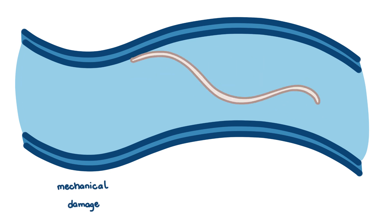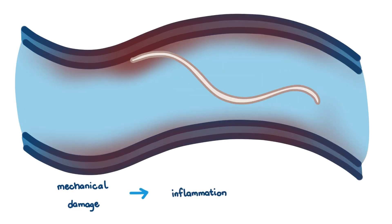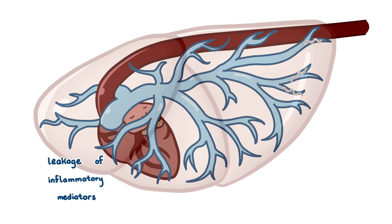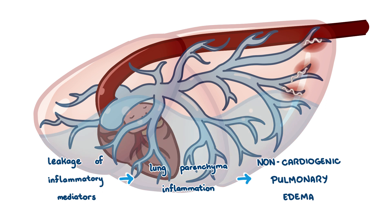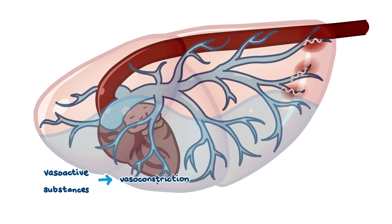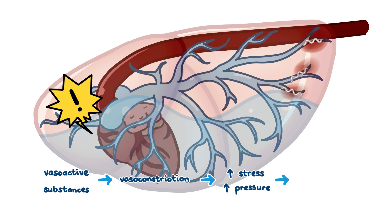Pathophysiology — again, heartworm is a slight misnomer. A lot of the pathology happens in the pulmonary arteries. The live worms mechanically damage the intimal lining of the arteries, making them inflamed. Persistent inflammation results in thickening of the arterial walls and interstitial fibrosis. Leakage of inflammatory mediators from the vessels spreads toward the lung parenchyma, causing non-cardiogenic pulmonary edema. The worms also release vasoactive substances that make the arteries constrict, further exacerbated by the release of endothelin-1 by endothelial cells and vasoactive substances by activated platelets. Vasoconstriction puts additional stress on already damaged vessels, especially during exercise. This is known as pulmonary hypertension.